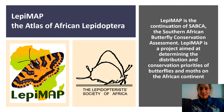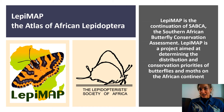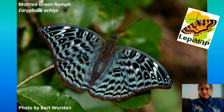Then there's Lepimap, the Atlas of African Lepidoptera, which covers butterflies and moths. Lepimap is the continuation of SAPCA, the Southern African Butterfly Conservation Assessment, but now Lepimap has expanded to include moths as well and we're covering the whole of Africa. We are very proud to have the Lepidoptera Society of Africa as a partner in this project. Here's a lovely example of a mottled green nymph — they are gorgeous butterflies. This photo was submitted to Lepimap by Bart Burstin.